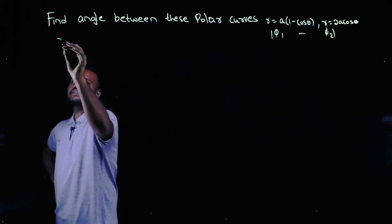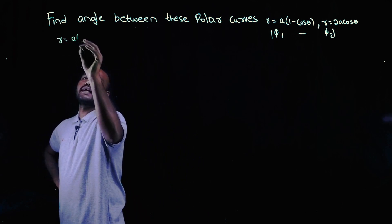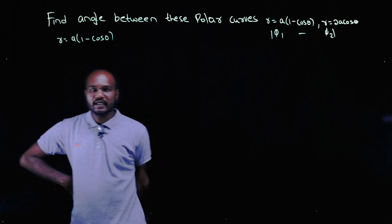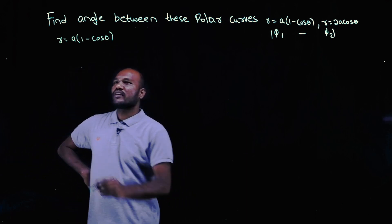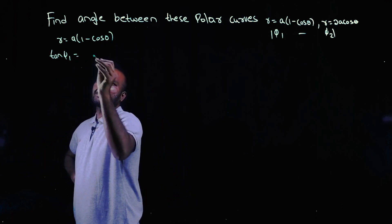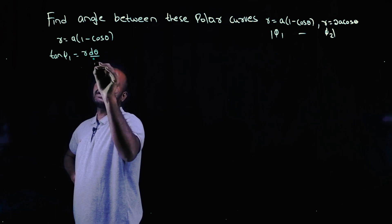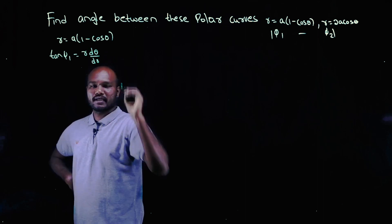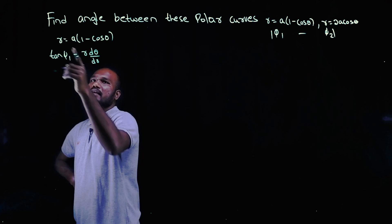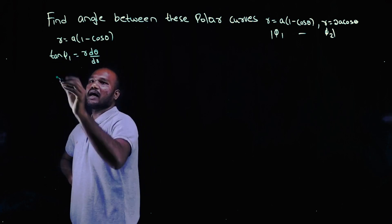Let's take curve number 1: r = a(1 - cosθ). To find φ₁, what we need is tan φ₁. Tan φ₁ is equal to r · dθ/dr. So r is directly given in the question; we have to find dθ/dr. Let's do it.